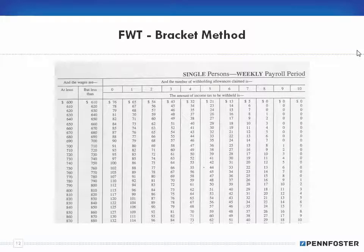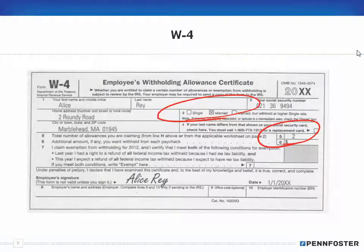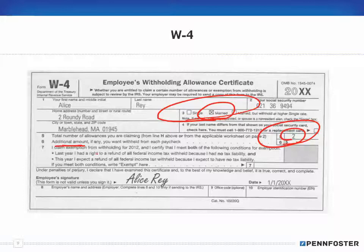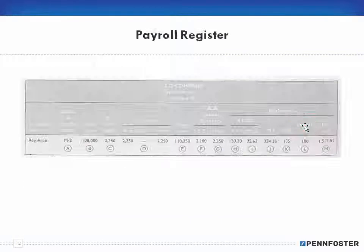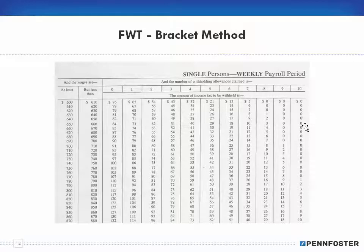I'll talk about the bracket method right now, and depending on time, I'll move to the percentage method in the next video. I'll use the W-4 example we had previously — the person being married with two deductions. Also remember there can be an additional amount withheld. For example, if you're doing contracting work and no taxes are taken out of that contracting pay, you might have an additional $25 taken out every paycheck to cover your liability.